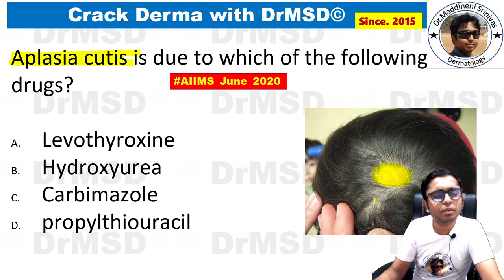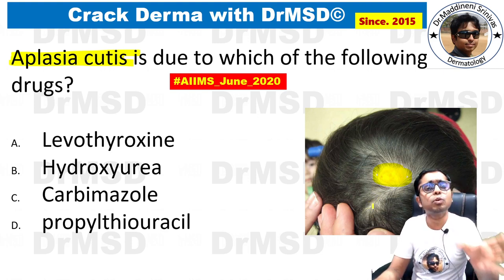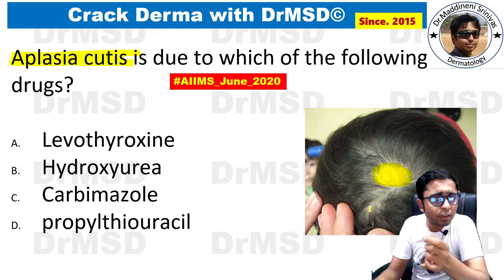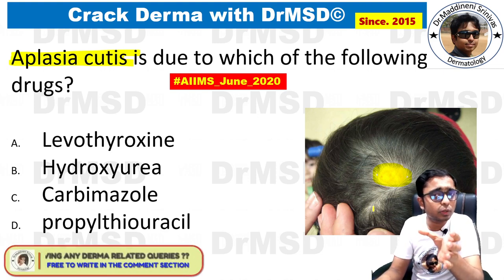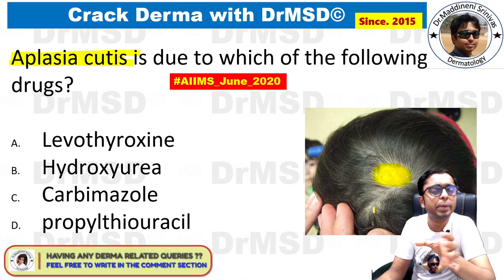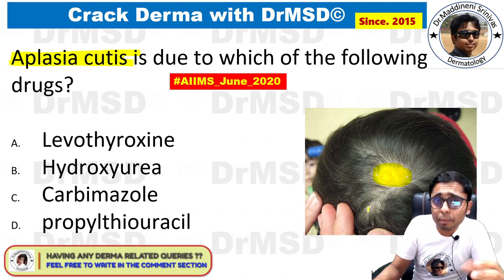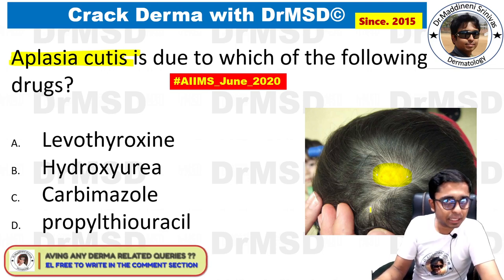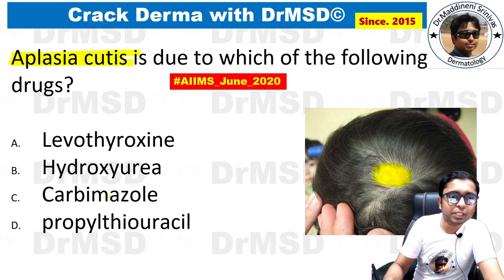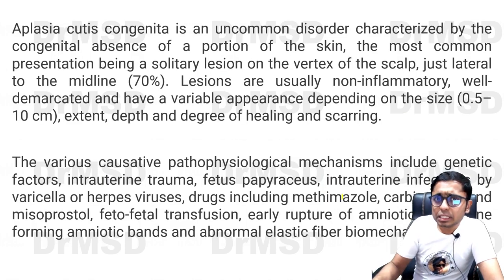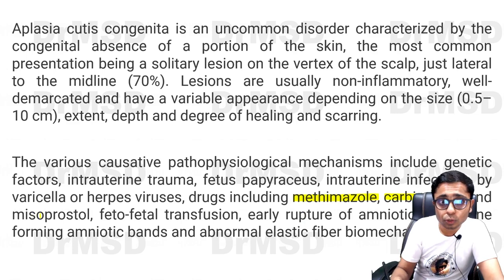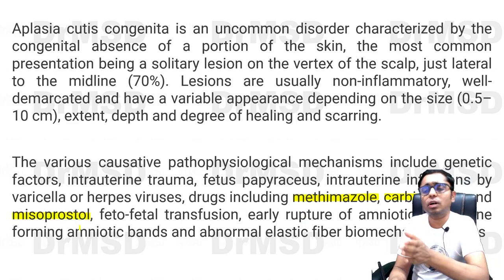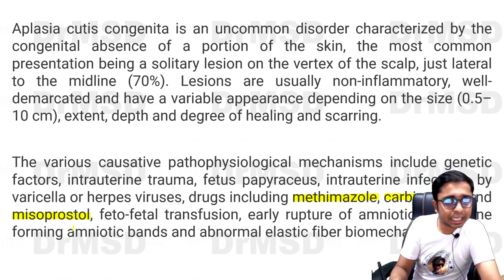Aplasia cutis is a condition where the development of skin over certain parts of the body is hampered, causing absence of cutaneous tissue. It most commonly manifests over the scalp — if asked as an image-based question, there will be a picture of patchy hair loss over the scalp. The answer is carbamazole. Not just carbamazole, but also methimazole and misoprostol — making this a possible gynecology and dermatology integration question.